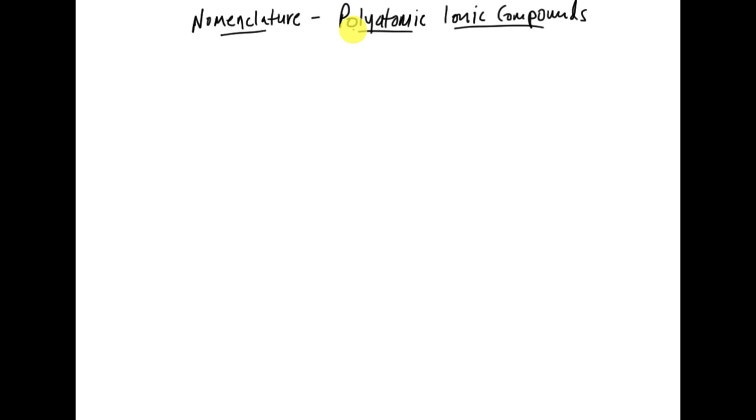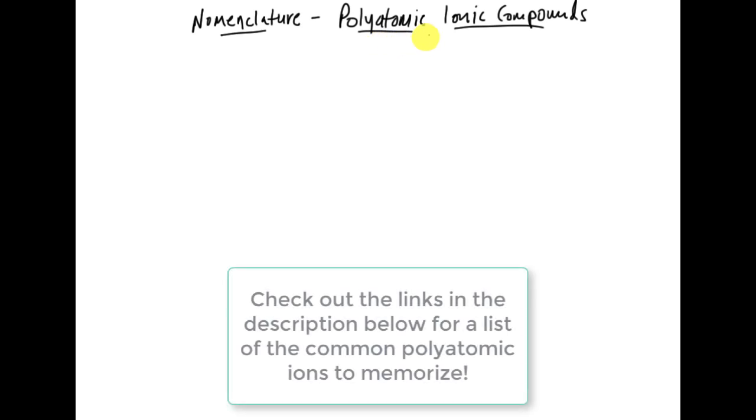Okay, hello everybody. In this lesson I'm going to talk about polyatomic ionic compounds. So these are ionic compounds that have polyatomic ions in them. Hopefully at this point you've got your polyatomic ions memorized because you're going to start using them a lot in this section.